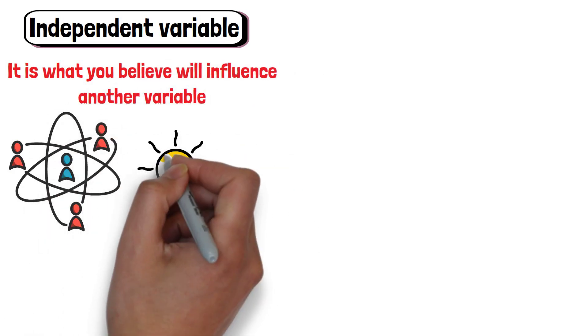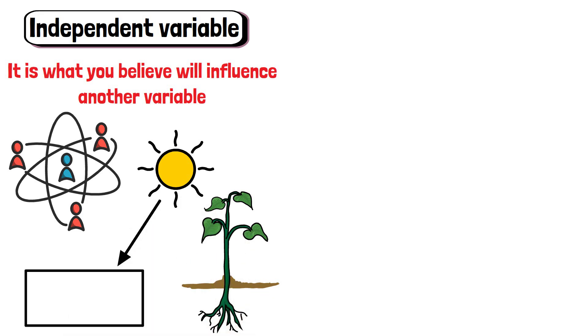For example, if you test how sunlight affects plant growth, the amount of sunlight is the independent variable.